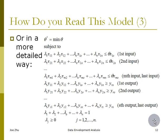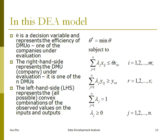So, here is a more detailed way in terms of the model presentation. Again, theta here is a decision variable, so in this model you have the decision variables are theta plus all the lambdas, all the weights. X and Y, these are all given values.